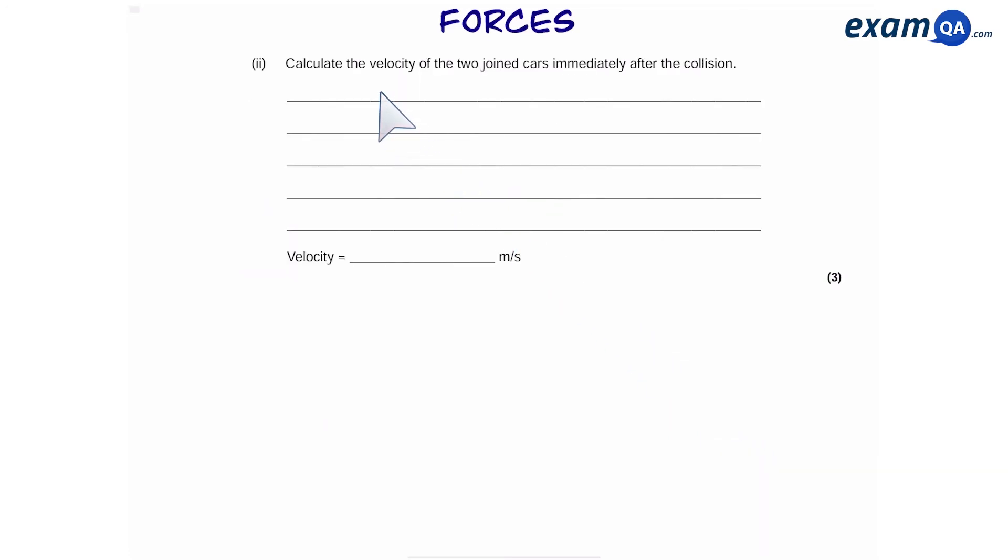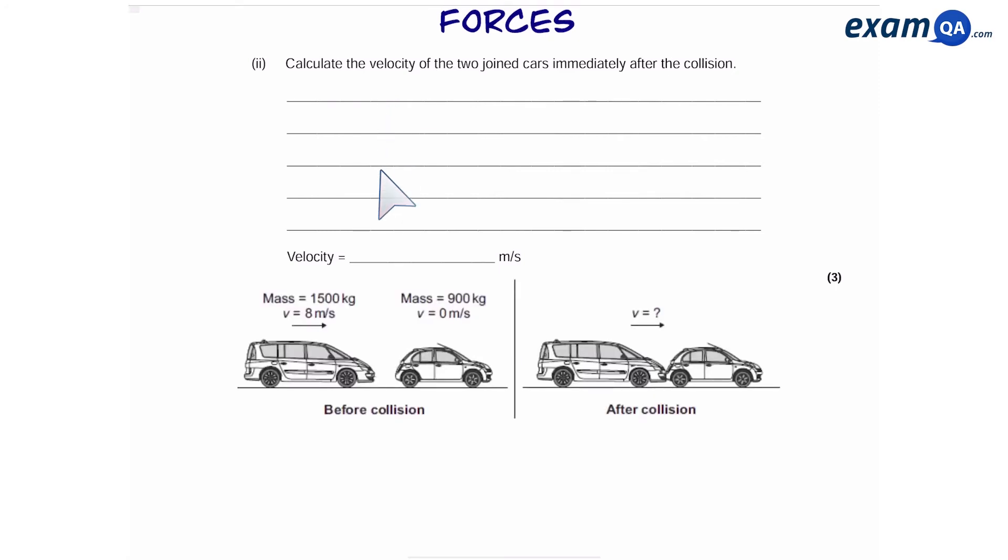Okay, next part. Calculate the velocity of the two joined cars immediately after the collision. So here's our two cars again. So here's how we do velocity questions involving momentum. First of all, we want to work out the total momentum on the left or before the collision.